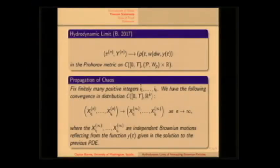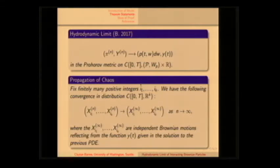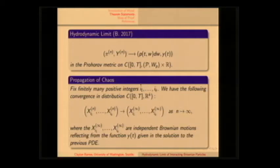The hydrodynamic limit statement is that the joint process of the empirical process with the barrier converges to the pair of this solution, where this is the law in the Prokhorov metric. The propagation of chaos is the usual statement that if I tag a finite number of fixed particles, then they converge to jointly independent processes, which in this case are reflecting Brownian motions from this limiting function y.